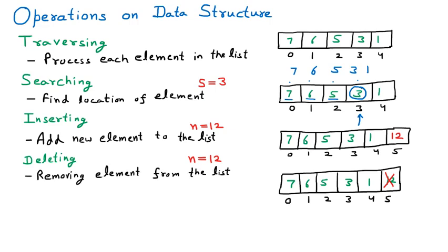In this case, twelve is deleted from the array and the other numbers remain the same. There are also some special operations on the data structure which we will cover next.